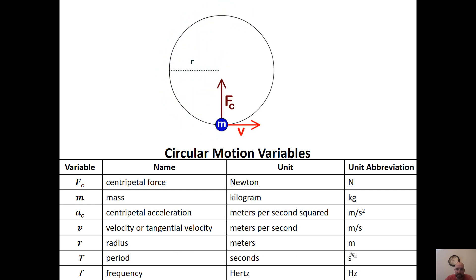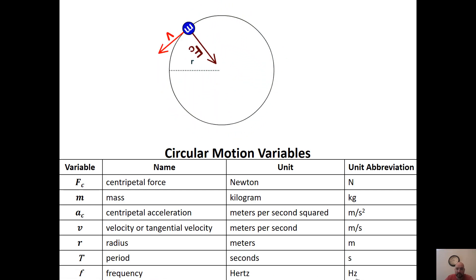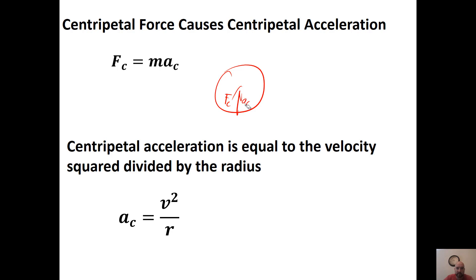We have period, which is in seconds — something special, not little t but capital T. Then there's frequency, something new, with the unit Hertz. Centripetal force causes centripetal acceleration — F = MA still applies, now for circular inward force and inward acceleration. Both force and acceleration are directed inwards. Centripetal acceleration has its own equation: centripetal acceleration equals velocity squared over the radius.